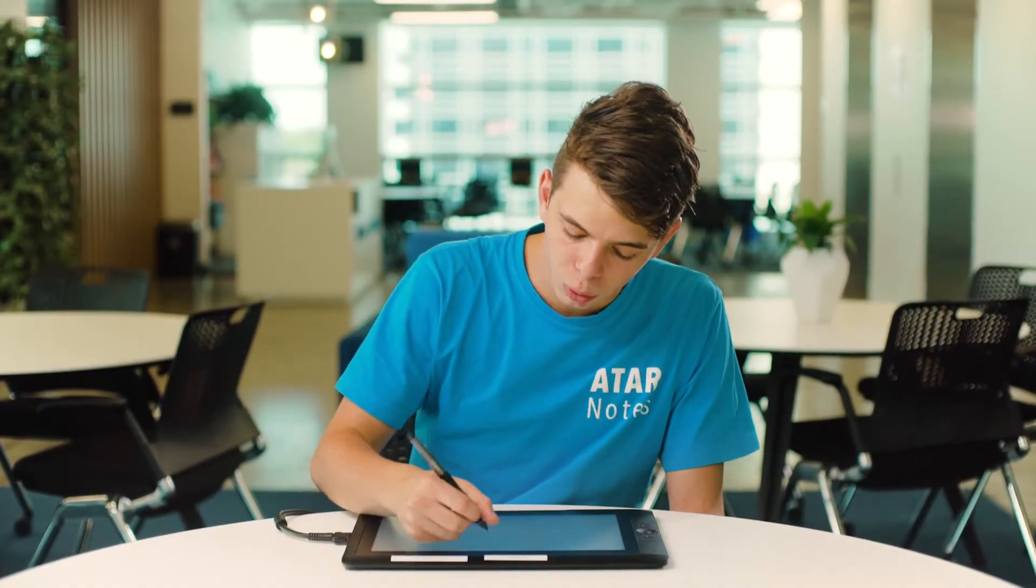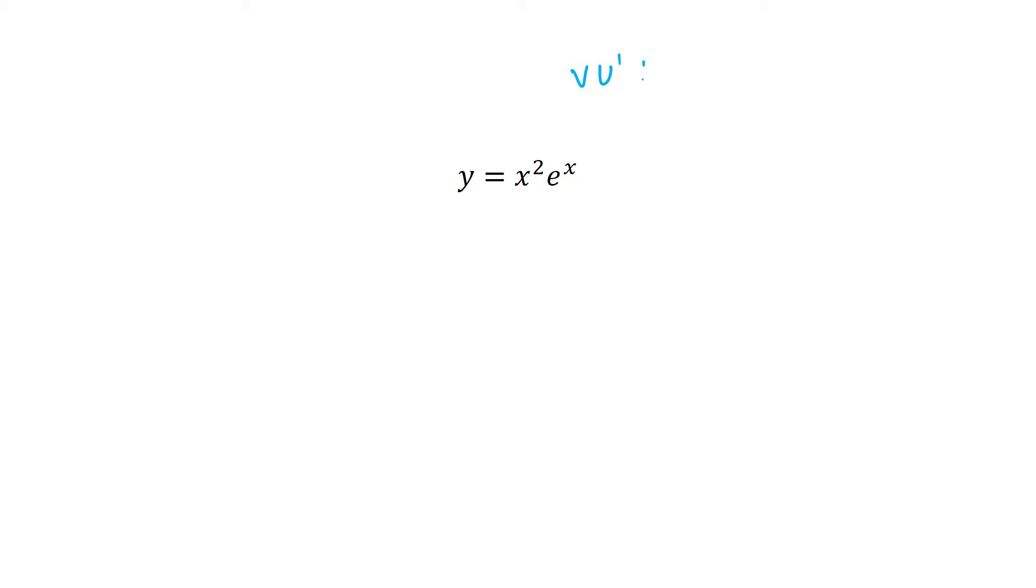Let's take a look at an example about how we'd use our product rule. So I've got y equals x squared times e to the power of x. Now remember the product rule was u'v + uv'.